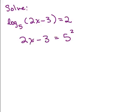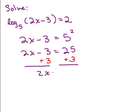We just have to square 5 and we need to add 3 to both sides. So we get 2x is 28, divide both sides by 2 and x is 14.